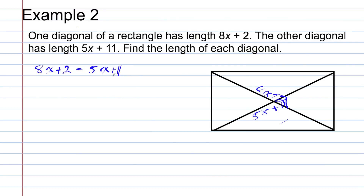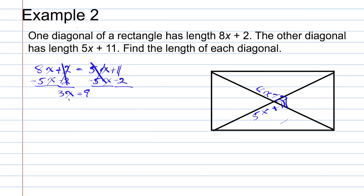We solve this equation to find the value of X by subtracting 5X from both sides, eliminating the variable from the right-hand side, and subtracting 2 from both sides to gather constant terms on the right. On the left we have 8X minus 5X, which gives 3X. On the right, 11 minus 2 gives 9. Dividing each side by 3, our solution is X equals 3.